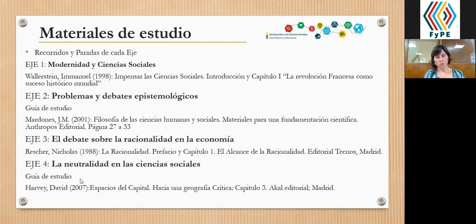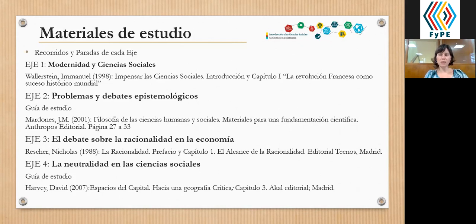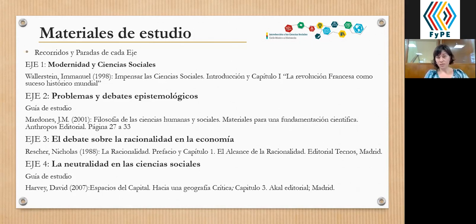Y en el caso del eje 4, tenemos el recorrido que está en el aula virtual, en la guía de estudio hay un material, y además tenemos el texto de Harvey. La guía de estudio podríamos decir que es casi como un resumen del texto de Harvey, trabajado un poquito más para ayudar a su comprensión. Cuando ustedes lo lean, van a encontrar que no hay tantas diferencias. Me parece importante que lean ambos materiales y vayan viendo qué parte les sirve para comprender el eje.